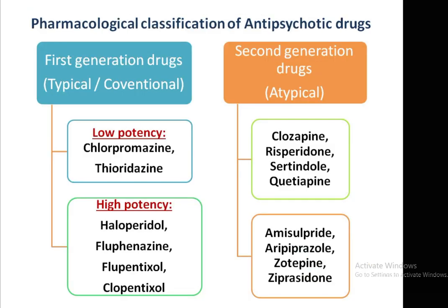Now we discuss the pharmacological classification of antipsychotic drugs, divided into two classes: first generation and second generation. First generation drugs are called typical or conventional drugs, further divided into low potency and high potency. Low potency includes chlorpromazine and thioridazine. High potency includes haloperidol, fluphenazine, and flupentixol.